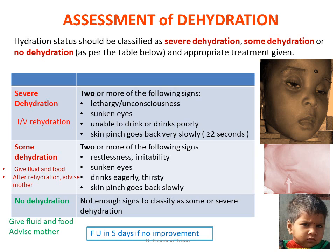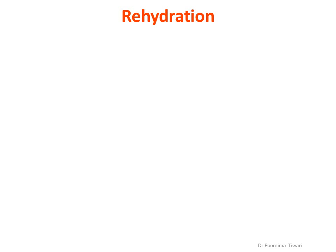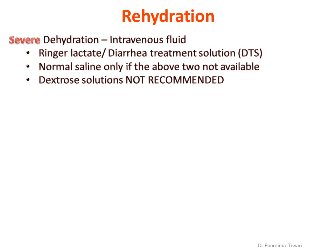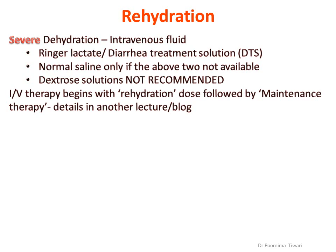Follow up after 5 days if there is no improvement. If the patient has severe dehydration, give intravenous fluid — the best recommended is Ringer's Lactate or diarrhea treatment solution. If neither is available, normal saline can be used. Dextrose solutions of any concentration should not be used. IV therapy begins with a rehydration dose, followed by maintenance therapy once hydration is restored.